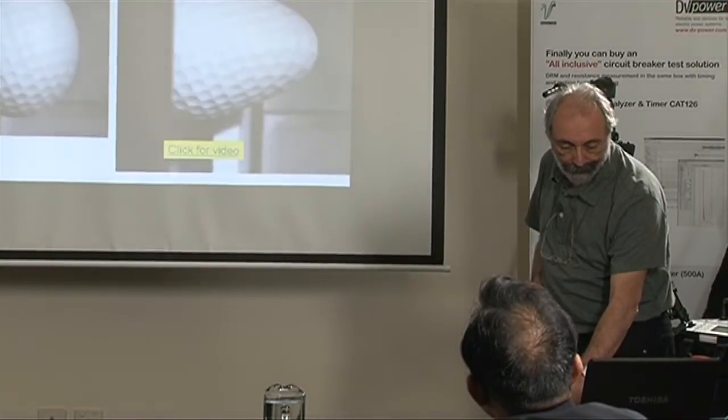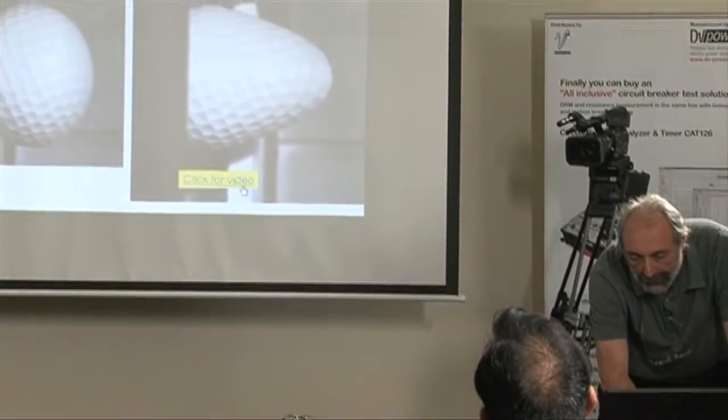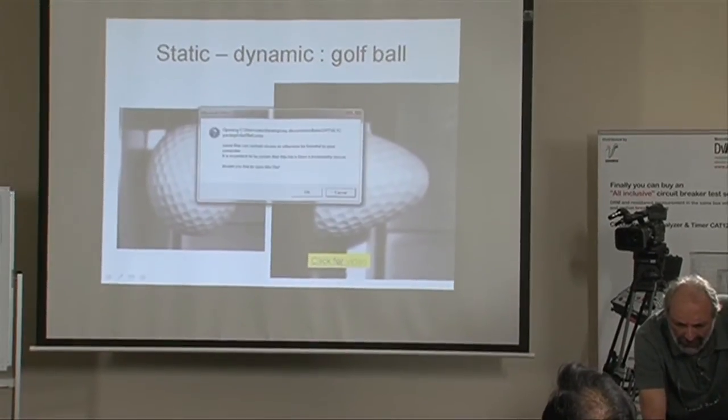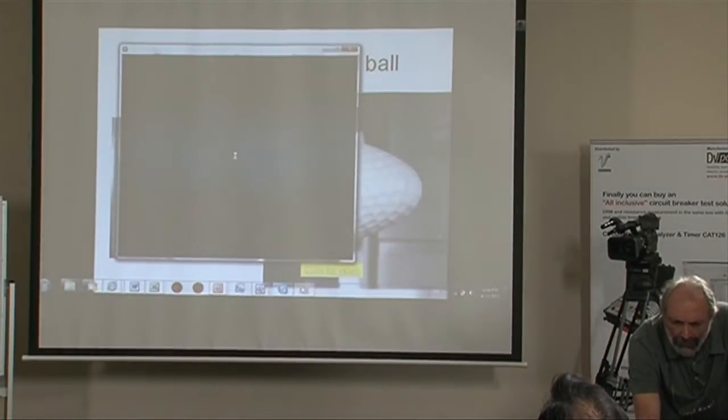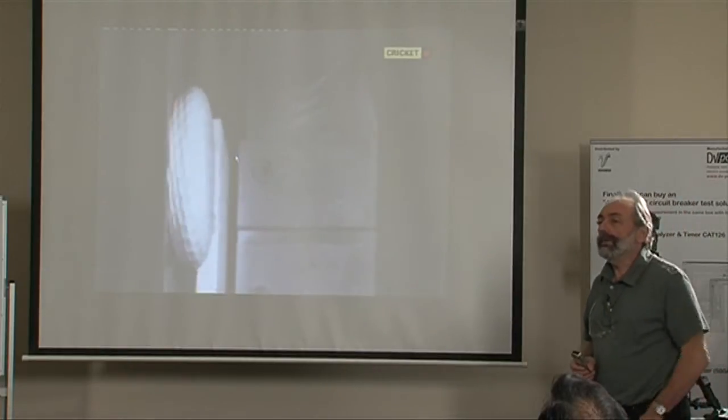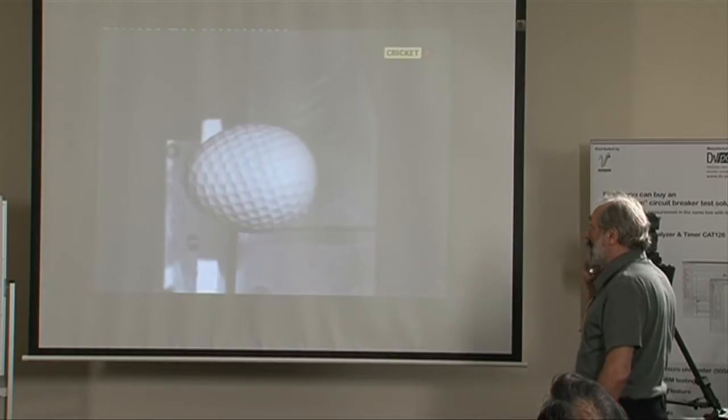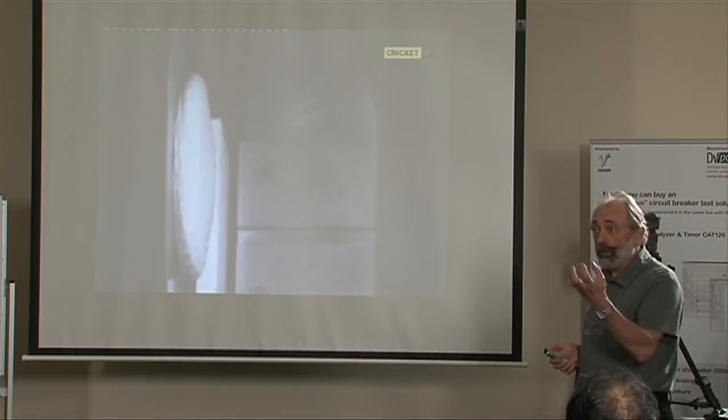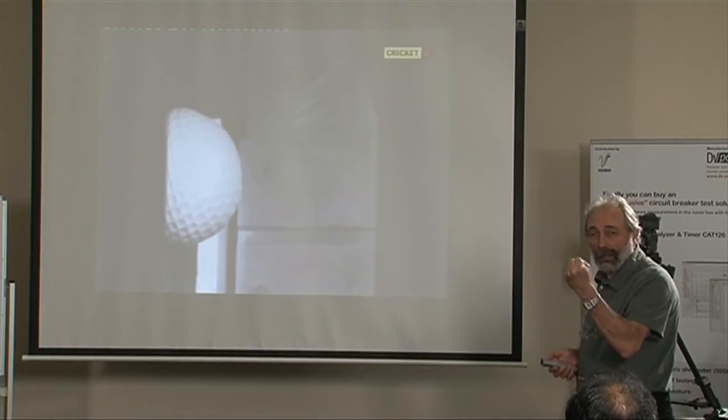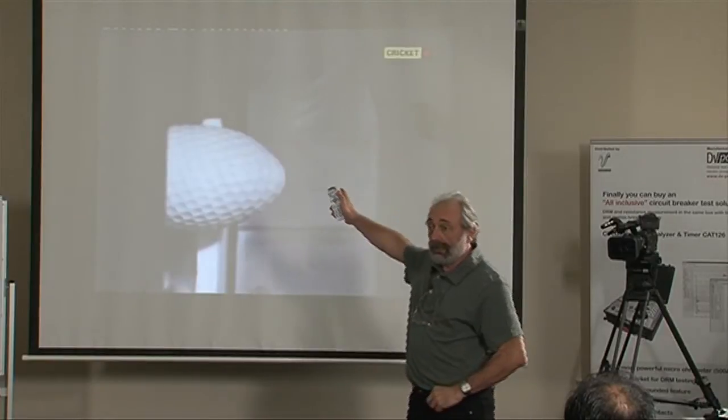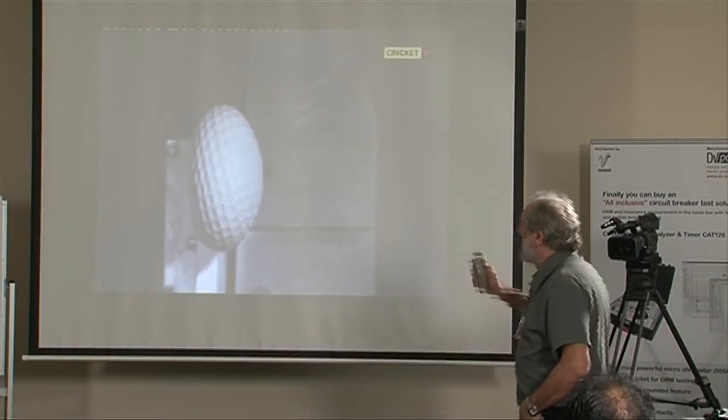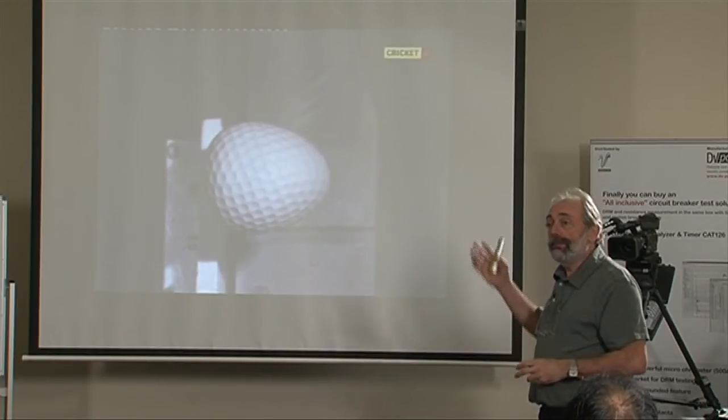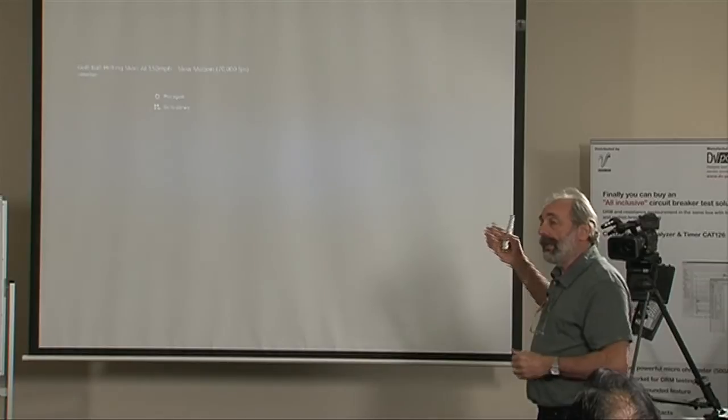Let me show you a video. I love this video because it gives you an idea of what the winding resistance dynamic resistance does. This is a golf ball. Have you ever seen this? When you hold the golf ball it's really rigid plastic but when it hits a steel plate at 150 miles per hour this is what it does. It deforms. You would never see this unless you had a high-speed camera, right?